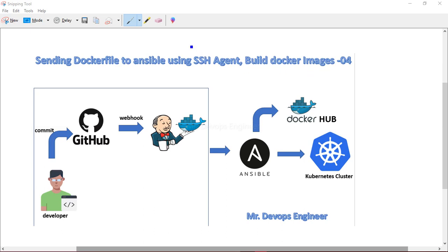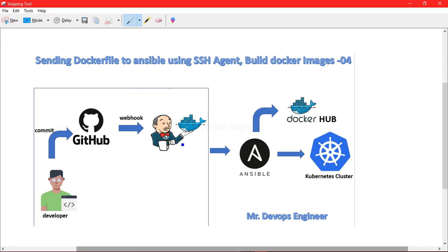In today's session, we will continue with the fourth video. We will see how we can send our Dockerfile to Ansible using SSH agent, and then build the Docker image on the Ansible server itself. As shown in the diagram, Jenkins will send the Dockerfile to Ansible, and once Ansible gets it, it will build the image. We also need to configure SSH between Jenkins and the Ansible server.